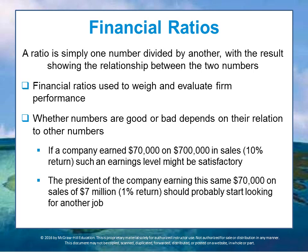An absolute value, such as earnings of $70,000 or accounts receivable $200,000, almost never provides much useful information because you don't really know the context to consider it, whereas a well-constructed ratio does provide more useful information. Whether those numbers are good or bad depends upon their relationship to other numbers. For example, if a company earns $70,000 on $700,000 in sales, that provides a 10% profit margin.